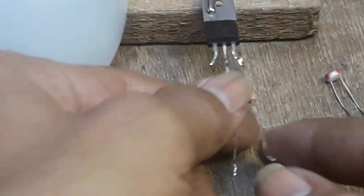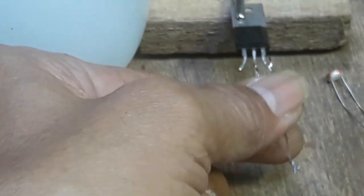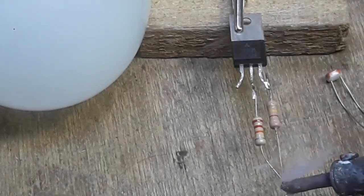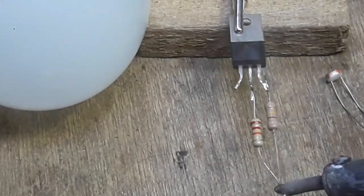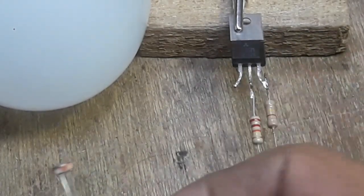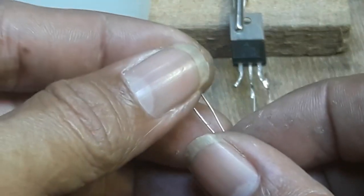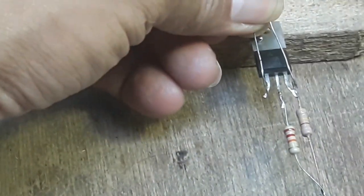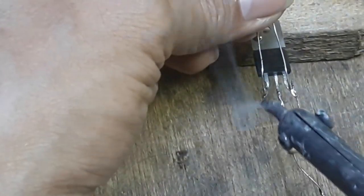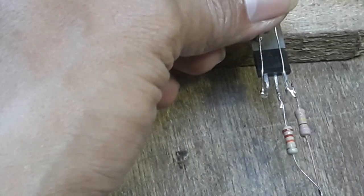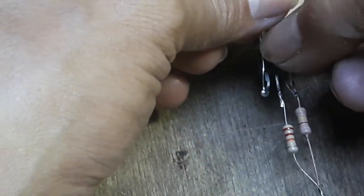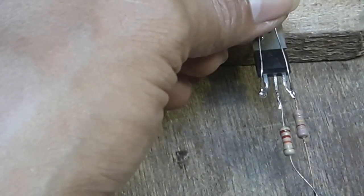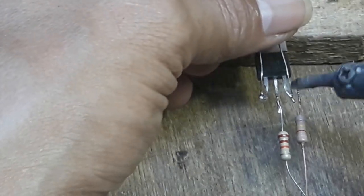Nah ini cara pemasangannya. Selanjutnya, yang bagian ujung sini kita tinggal jumper dan kita kasih solder, kita kasih timah. Langkah berikutnya, untuk pemasangan LDR-nya, posisikan di katoda dan gate. Di jumper sini, pinggir sama pinggir untuk pemasangan LDR-nya.